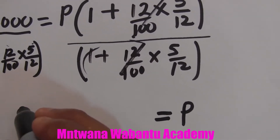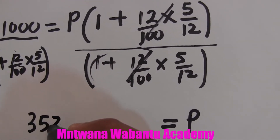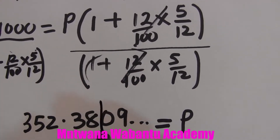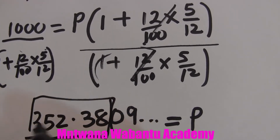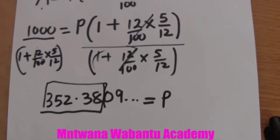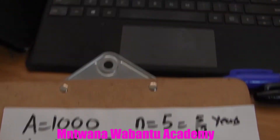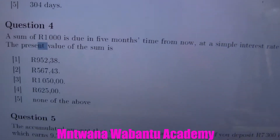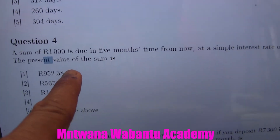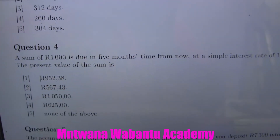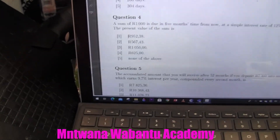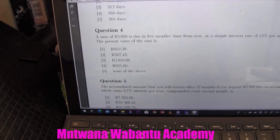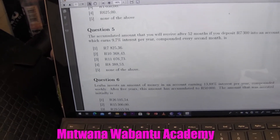Approximated to two decimal places, the answer is 952.38. So the principal — the amount that has to be invested — is 952.38. Coming to the options, that is going to be option number 1. Now let's go to question number 5.